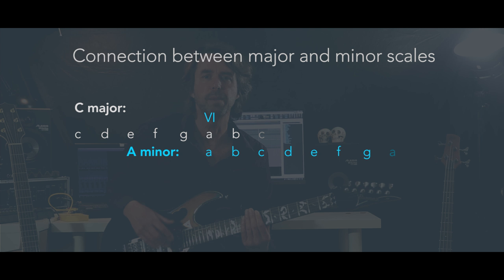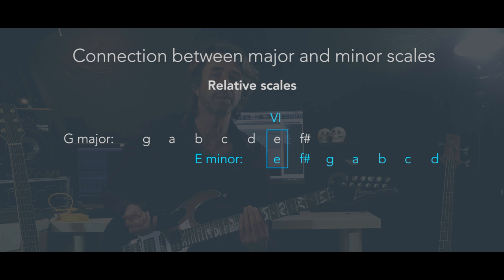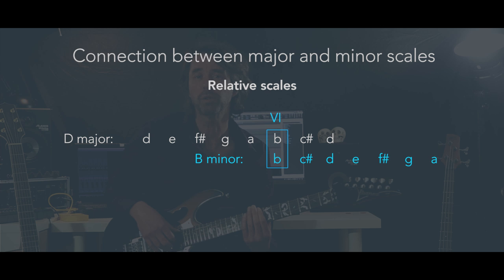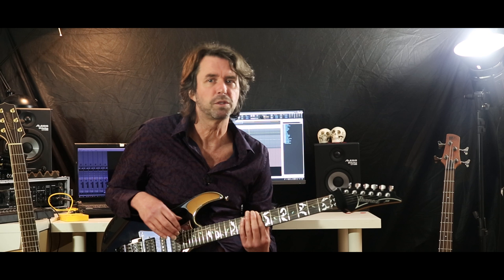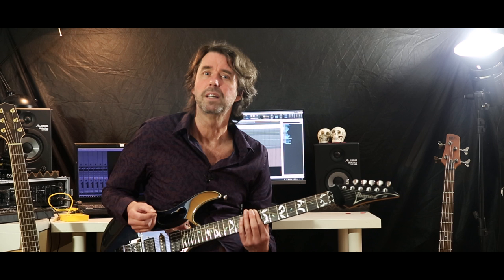We call these scales relative scales — A minor is the relative minor scale of C major. And the same goes for other keys: E minor is the relative minor scale of the G major scale, and B minor is the relative minor scale of the D major scale. So the A minor pentatonic scale, which we use throughout this video, has the same five notes as the C major pentatonic scale — A minor pentatonic and C major pentatonic are connected relative scales.